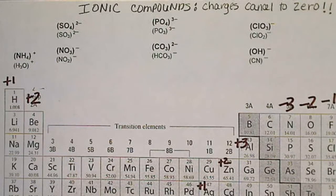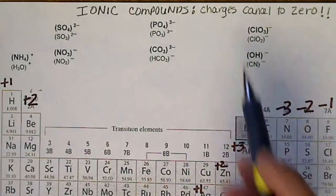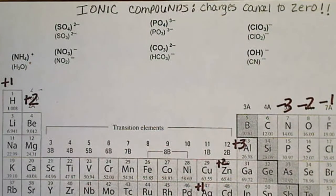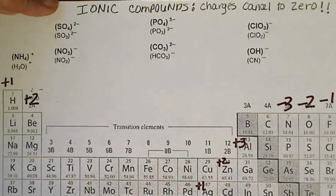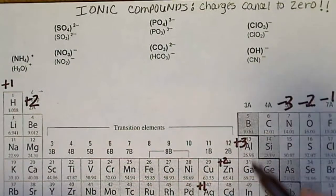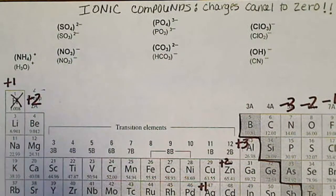When we are learning to name ionic compounds or come up with their formulas, we're going to see that the formulas are such that the charges cancel to zero. We're going to look at the periodic table and look at the charges, and then we're going to make a distinction between two types of metals and two types of nonmetals. This bold line on the periodic table separates the metals from the nonmetals.